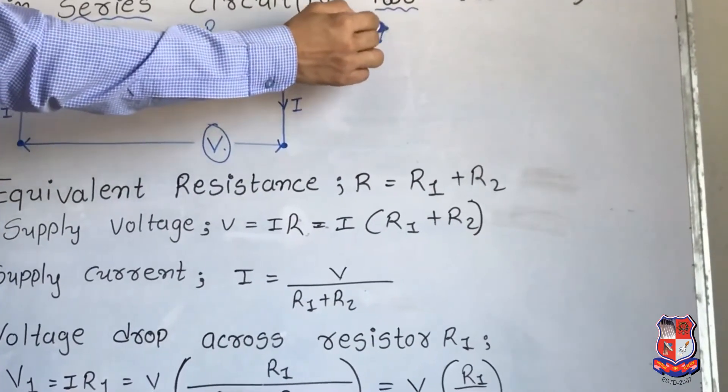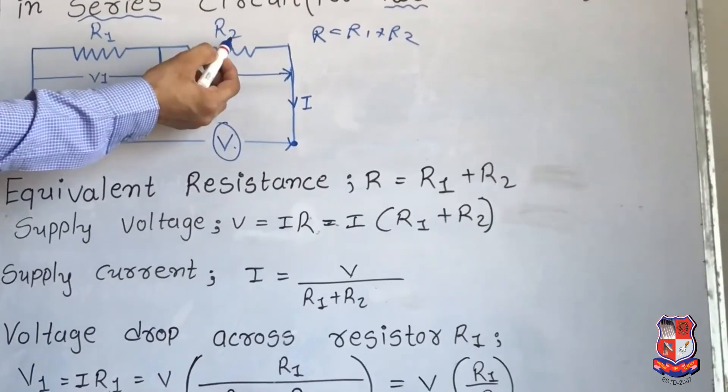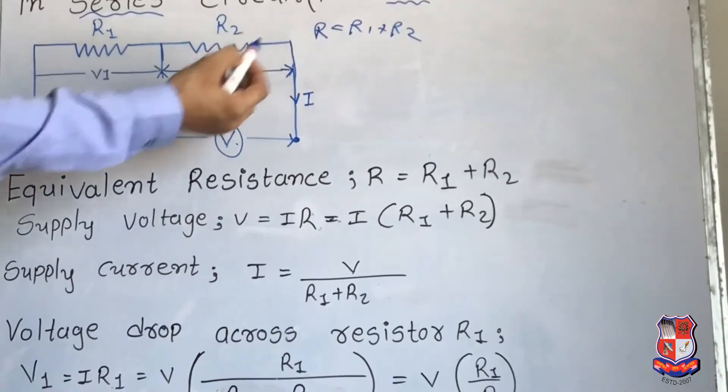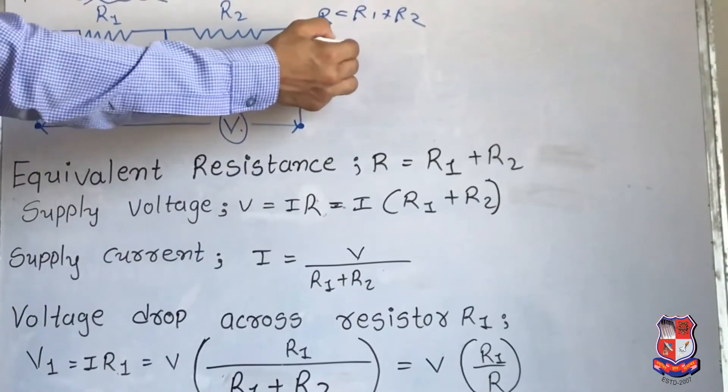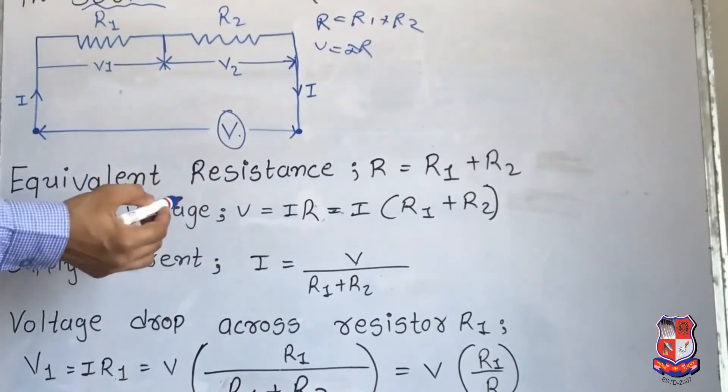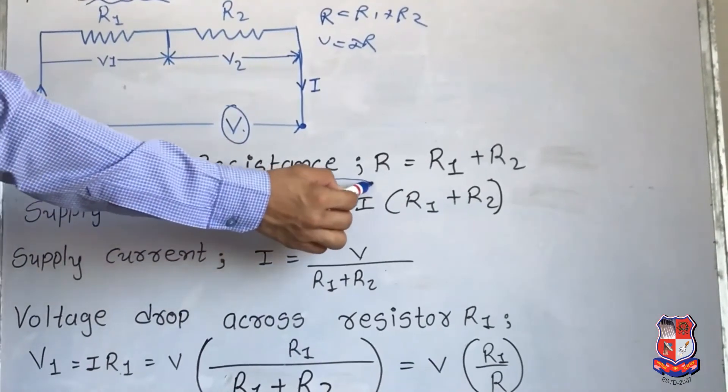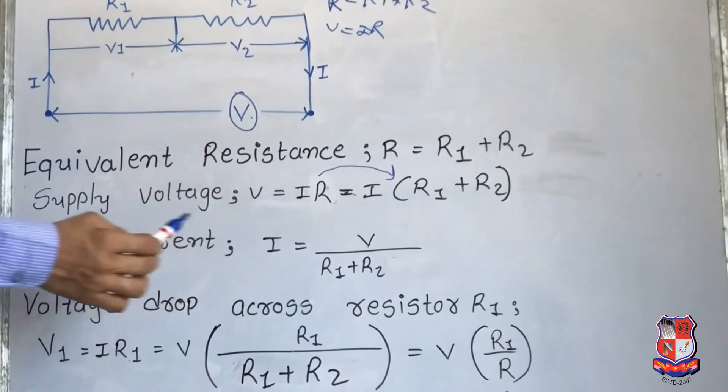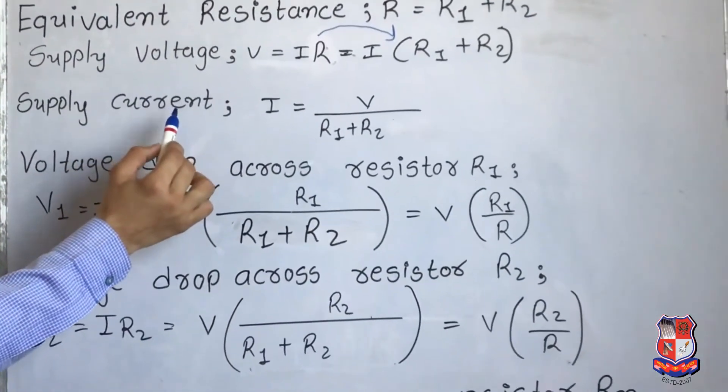So you will add R1 plus R2. Supply voltage equation is V is equal to IR. V is equal to IR, put the value of R in this. R1 plus R2, so your supply current will be...